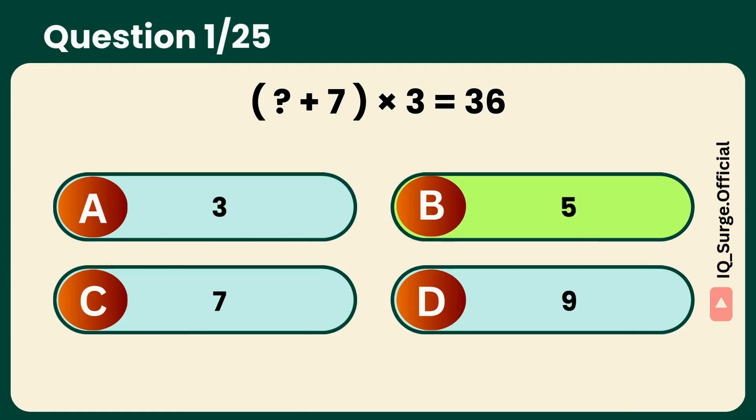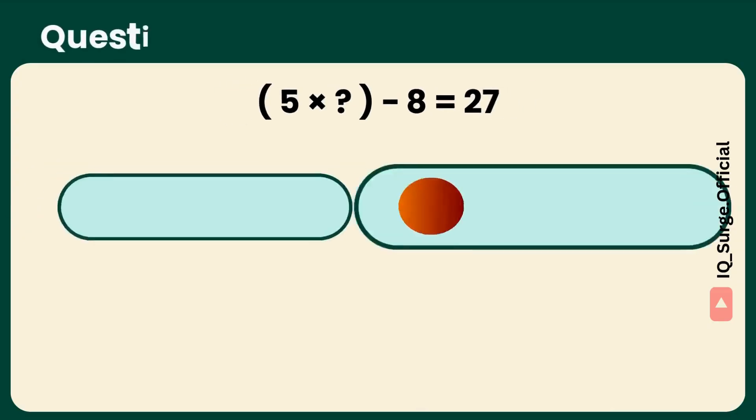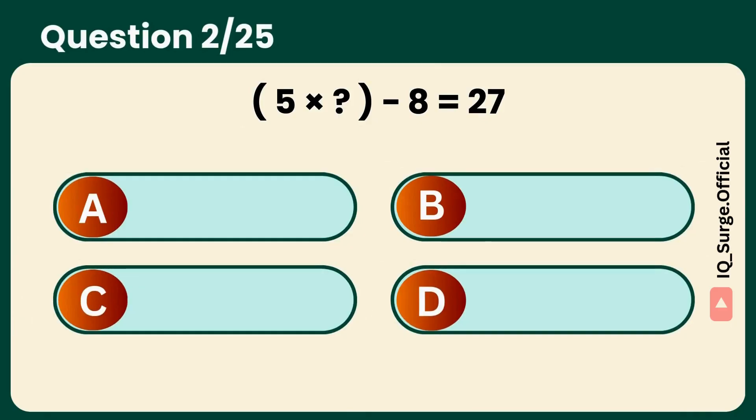Yes, it's five. Warm-up done. A quick multiply and subtract puzzle. Spot on. The missing number is seven.